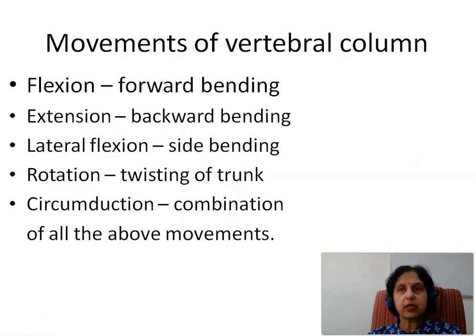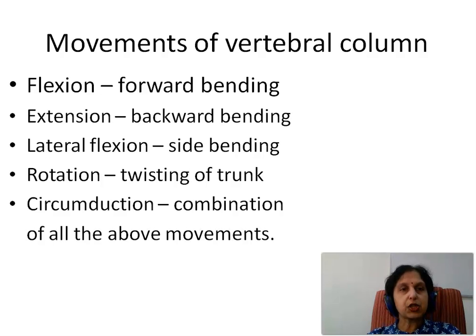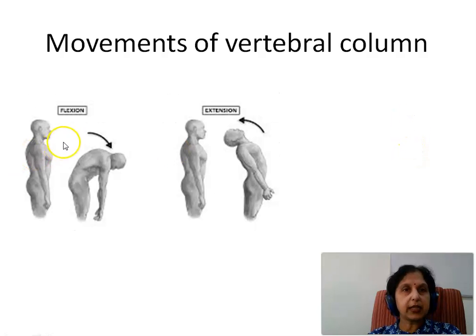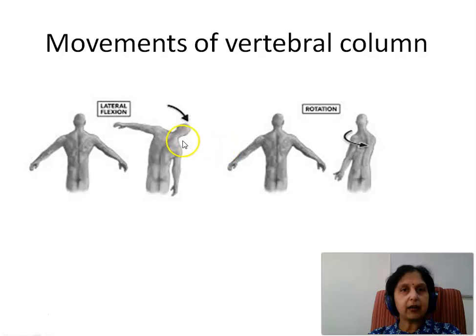We then see movements of the vertebral column: flexion, which is forward bending; extension, backward bending; lateral flexion, that is bending on the sides; and rotation, which is twisting of the trunk; and circumduction, which is a combination of all the above movements. What we see here is flexion or forward bending, extension or backward bending, lateral flexion or side bending, and rotation or twisting of the trunk.